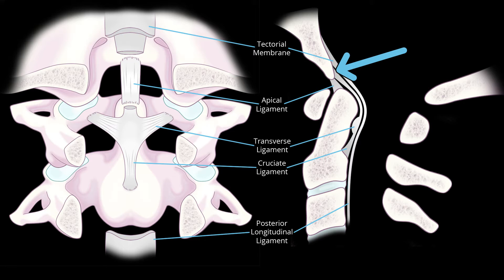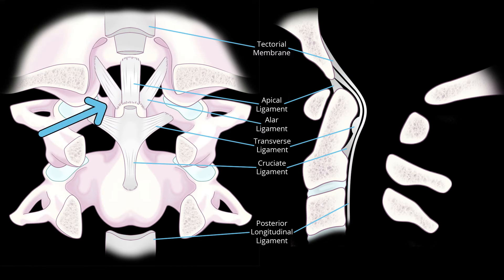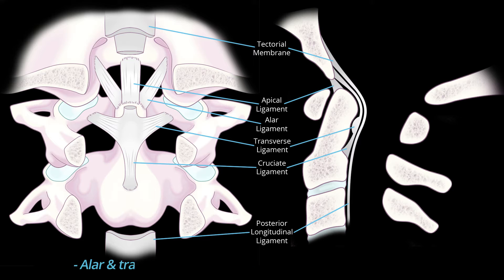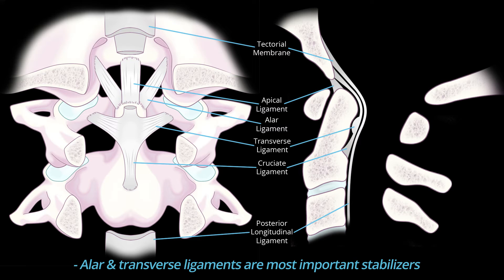The alar ligaments attach to the posterior margin of the dens and slope upwards to attach to the lateral margins of the foramen magnum. The alar ligaments limit rotation and lateral movement of the head. The alar ligaments and the transverse ligament are the most important stabilizers of the atlanto-axial joint.